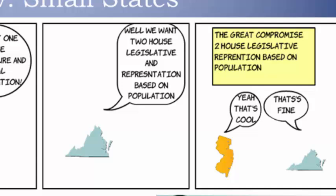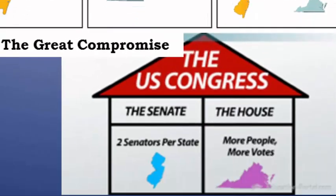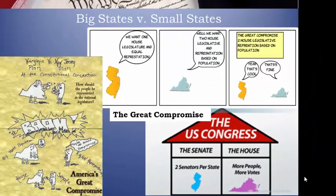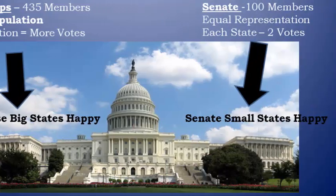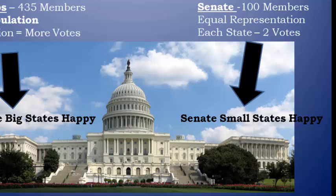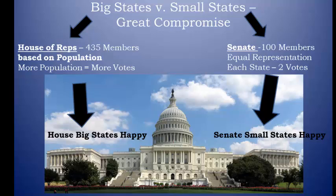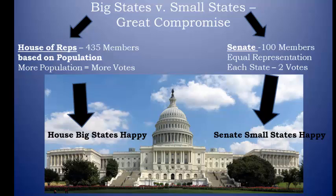A solution was arrived at known as the Great Compromise, which created a two-house Congress — one based on population, known as the House of Representatives, and one known as the Senate, with equal representation. The House of Reps made the big states happy, and the Senate made the small states happy, and still does today. By creating a two-house legislature, the delegates were dividing power further, which appealed to their Enlightenment tendencies towards separation of powers — remember Montesquieu. The Great Compromise solved the problem of one state, one vote.